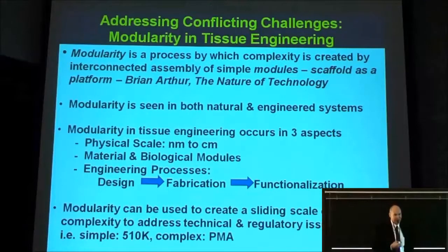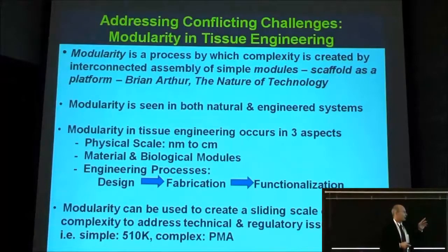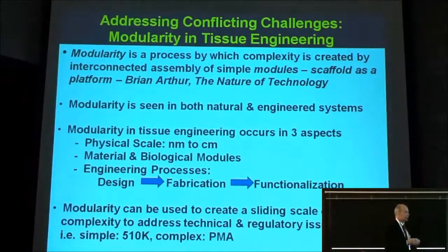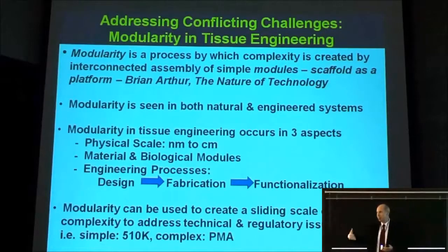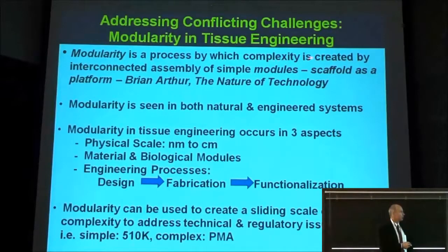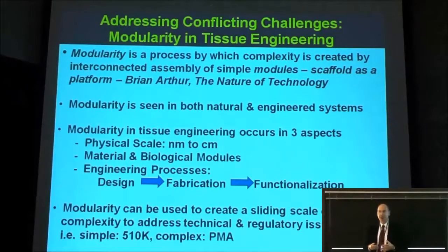I think this requires a way of thinking about how we engineer scaffolds. I was reading this book by Brian Arthur called The Nature of Technology: What It Is and How It Evolves — it's like a philosophy and history of technology book. He talked about how we develop technologies, like the jet engine developed from props, and people built components, building more complex technologies from simpler modules. I think that's the idea we have to apply in this process: modularity. It's a process by which complexity is created by an interconnected assembly of simple modules. We have to think of the scaffold as a platform for a modular approach to tissue engineering therapies.